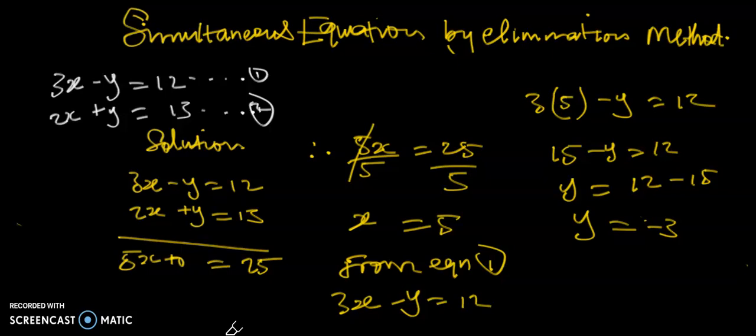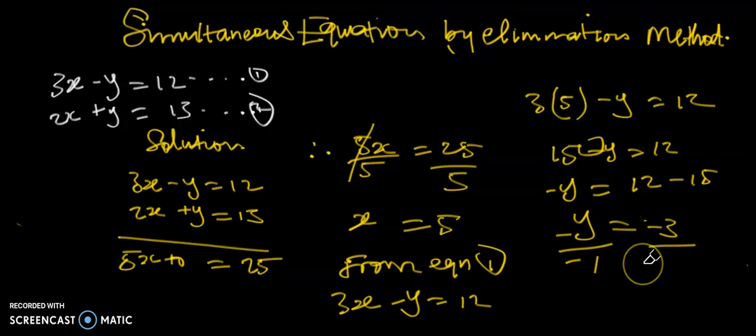That is how we deal with simultaneous equations by elimination. Just before you go — remember there was a negative sign, so negative y divided by negative 1 means the coefficient is 1, which confirms the value for y is negative 3. Do subscribe to the channel to be notified when we upload new videos. In the next video we shall be dealing with simultaneous equations using substitution and graphical methods. Enjoy!